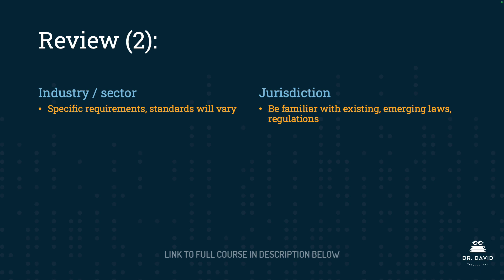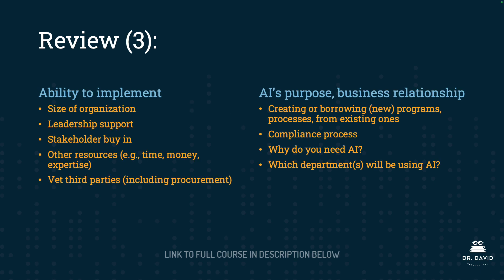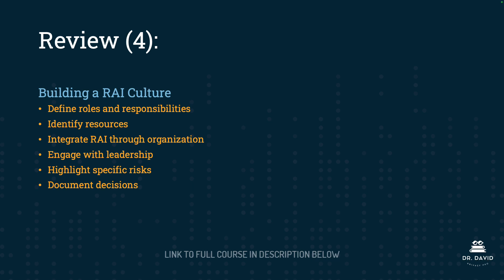With regards to jurisdiction, you want to be familiar with existing and emerging laws and regulations. With regards to ability to implement, consider the size of the organization, leadership support, stakeholder buy-in, other resources, and be sure to vet all third parties across the supply chain. When establishing AI's purpose and its relationship with your business, consider whether you'll be creating new programs and processes or borrowing from existing ones, and identify the compliance process. Ask why you need AI and which departments will be using it. Finally, building a culture of responsible AI requires defining roles and responsibilities, identifying resources, integrating responsible AI throughout the organization, engaging with leadership, highlighting specific risks, and documenting decisions.